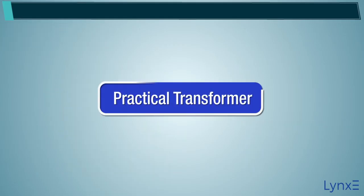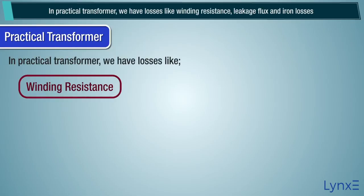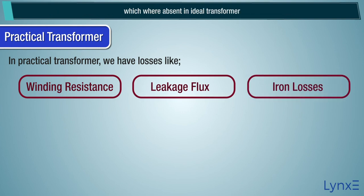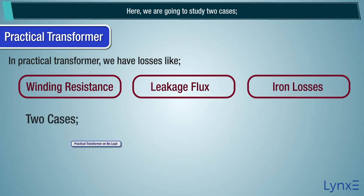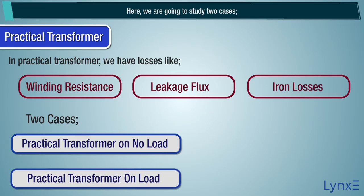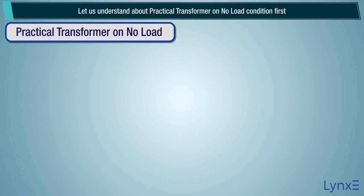Practical transformer. In a practical transformer, we have losses like winding resistance, leakage flux, and iron losses, which were absent in the ideal transformer. Here, we are going to study two cases: no load condition and on load condition. Let us understand about practical transformer on no load condition first.